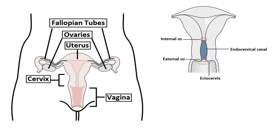Anatomically and histologically, the cervix is distinct from the uterus, and therefore it is considered as a separate anatomical structure. The cervix is composed of two regions: the ectocervix and the endocervical canal. The ectocervix is the portion of the cervix that projects into the vagina, and it is lined by stratified squamous non-keratinized epithelium. The opening in the ectocervix, the external os, marks the transition from the ectocervix to the endocervical canal.